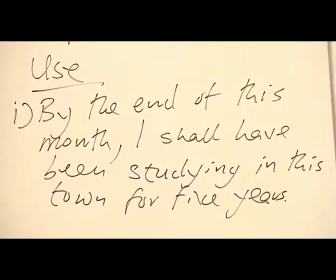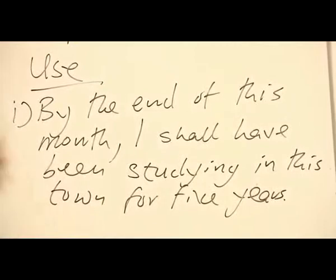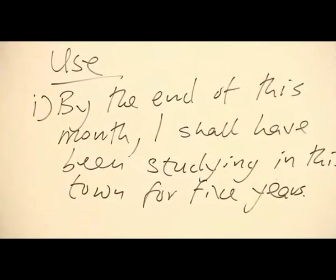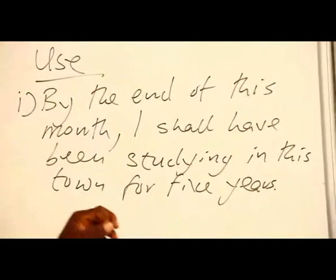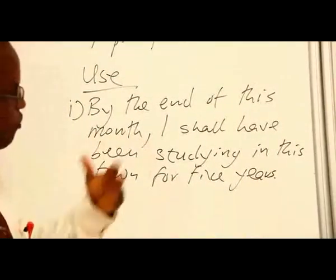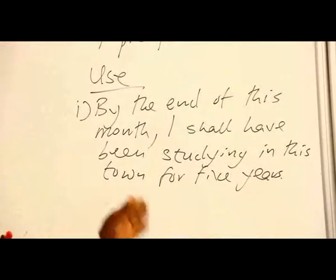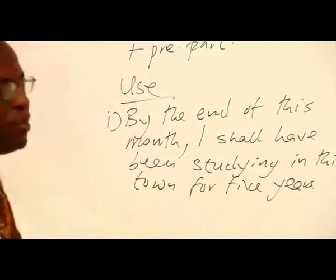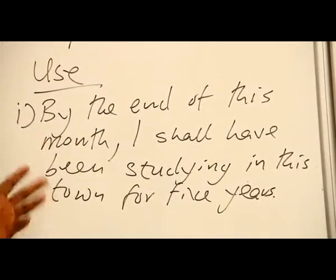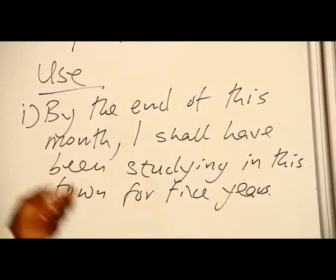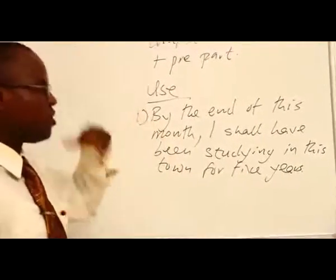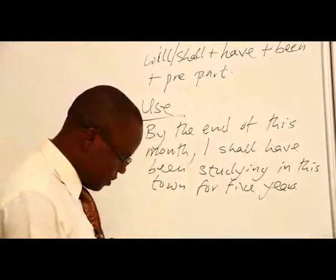If you look at that, it therefore means that at some point in time in the future, I shall have been spending this time. By the end of the month, I would have completed five years, but obviously I wouldn't be leaving the town — it tells that I have completed that time, but the action of studying will still be continuing in the future. If we use the future perfect tense instead — 'I shall have studied in this town for five years' — it gives a precise stop to complete the five years without the sense that the action of studying still continues. That is where the difference comes in.